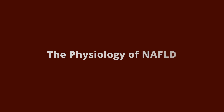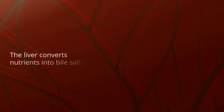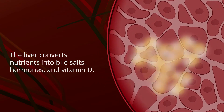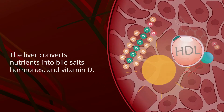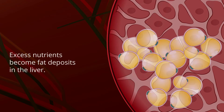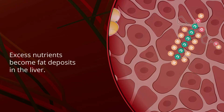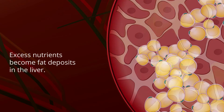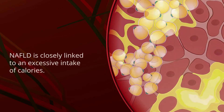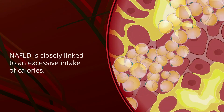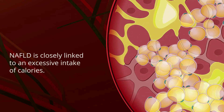The liver does not normally store fat. It just packages the lipids and sends them out to do work, like making bile salts, hormones, and vitamin D. When the body takes in excess nutrients, including carbohydrates and proteins, these can be converted into triglycerides, another type of lipid. When the body does not need that stored energy to fuel the body's activity, the liver continues to accumulate deposits of fat.